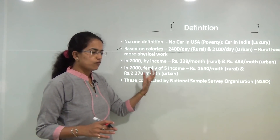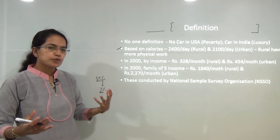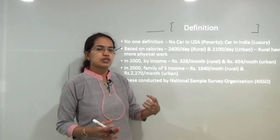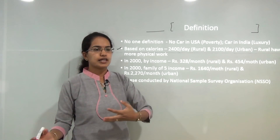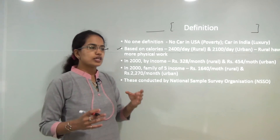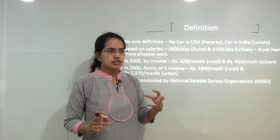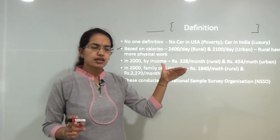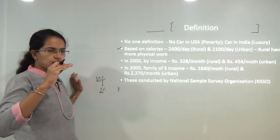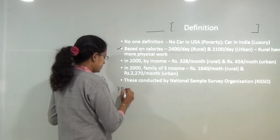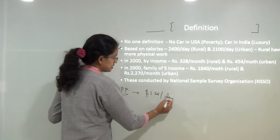Moving from one nation to another, there is no fixed or single definition that can explain poverty. A person who does not own a car in the United States could be considered poor, but in India a car is considered a luxury. There is no one common definition applicable throughout the world. However, efforts have been made to bring all nations to one parity, and it was decided that $1.25 per day is the minimum requirement to define poverty.